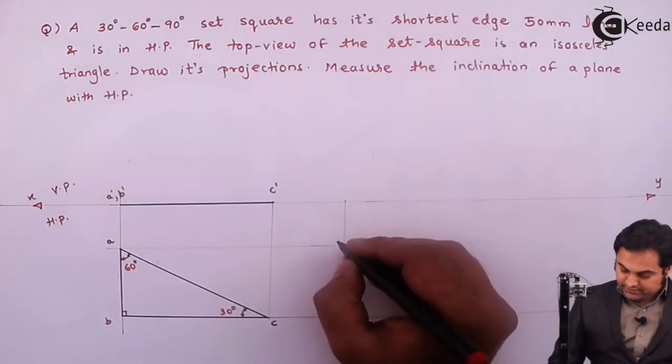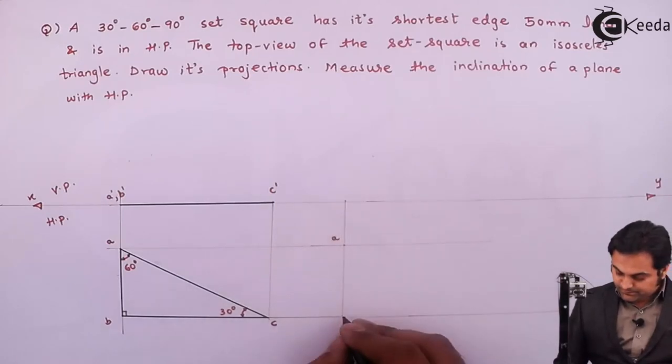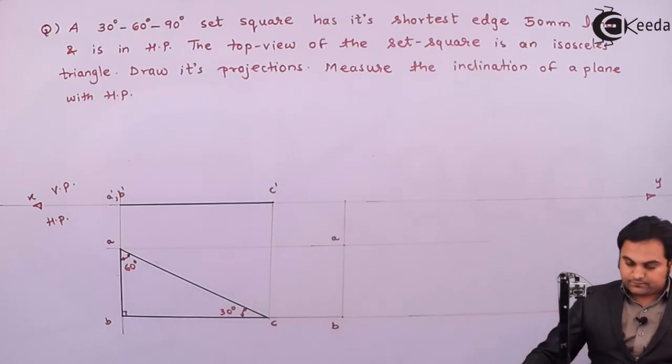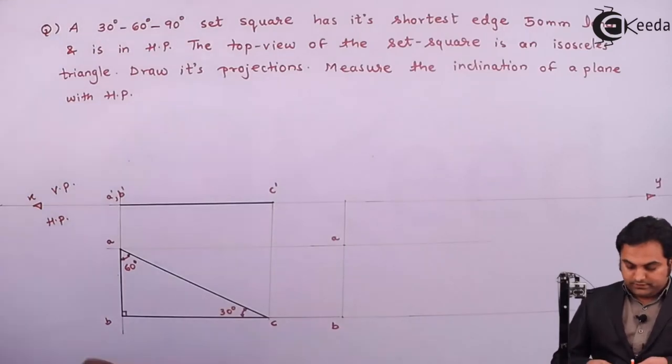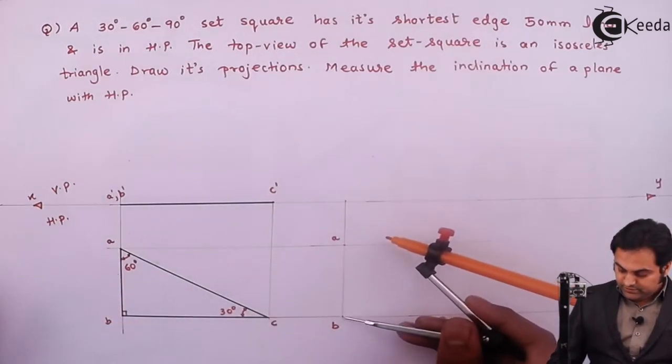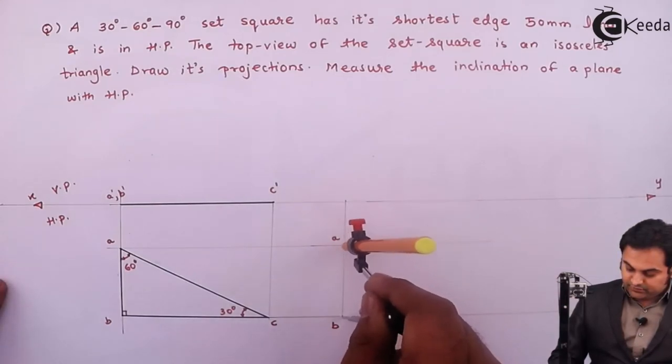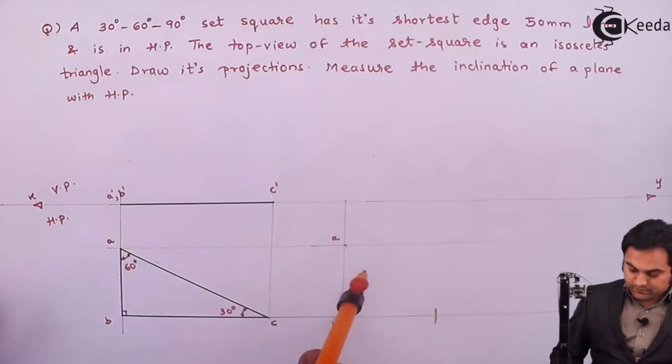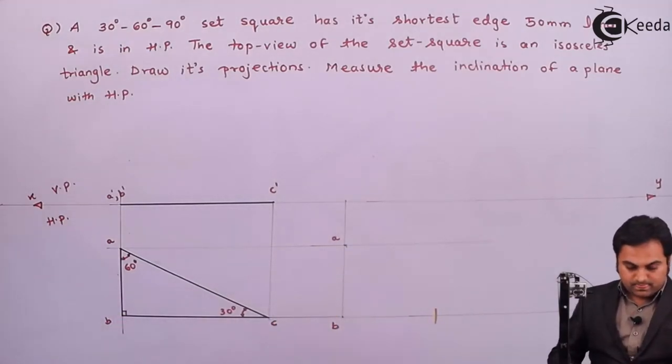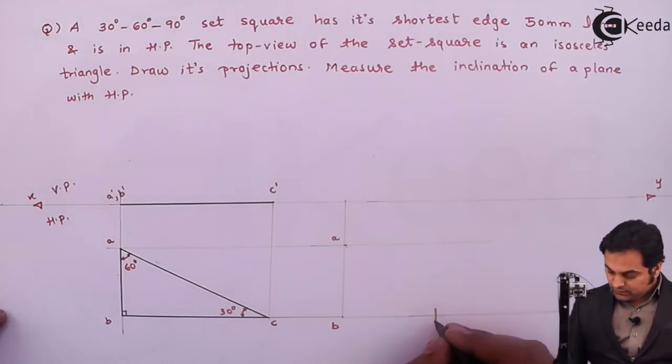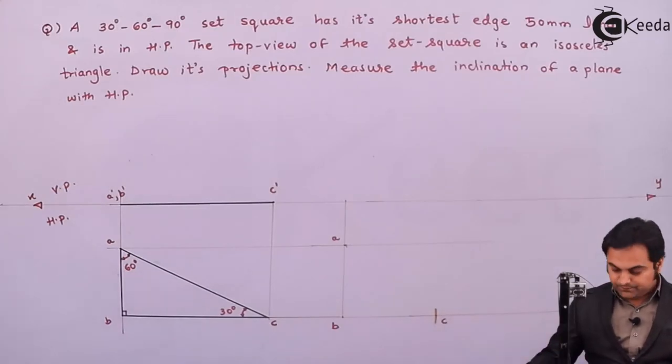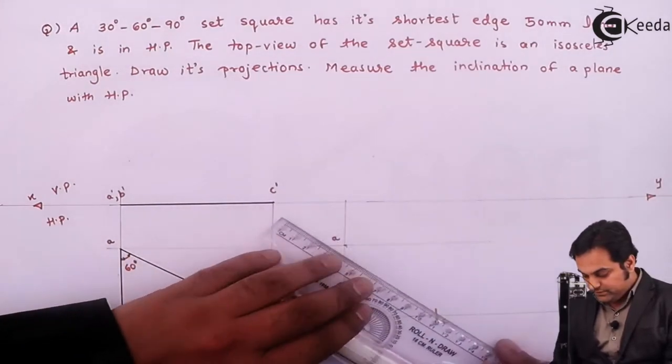Next, this side AB will be constant. And then BC will be reduced. So I'll measure the distance AB and since I want an isosceles triangle, cutting it here. This is point C. Joining them light.